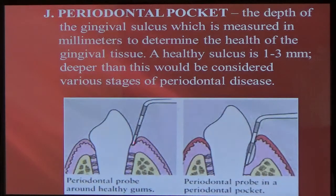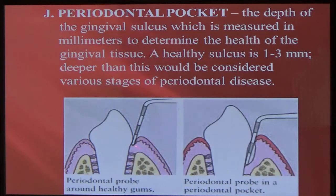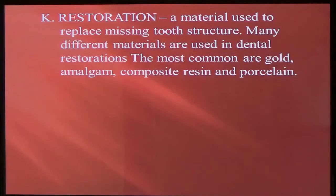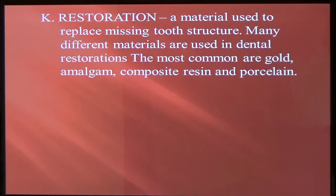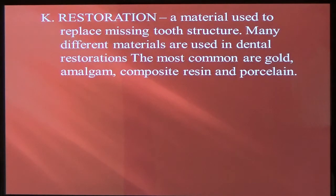Here's a periodontal probe measuring the gum on a healthy patient, and on a patient with some gum disease, we have bone loss and attachment loss. The probe is going to go deeper — here we have about an eight or nine millimeter pocket, and here we have a two or three millimeter pocket. A restoration is any material we use to replace missing tooth structure or a missing tooth. All of these are restorations: bridges, crowns, partial dentures, dentures.